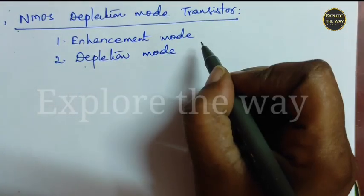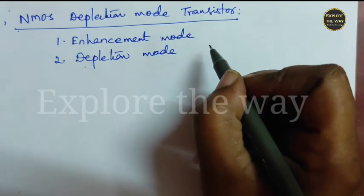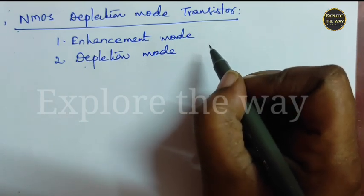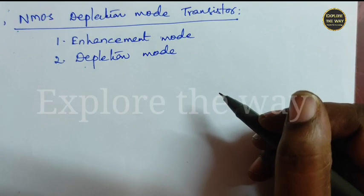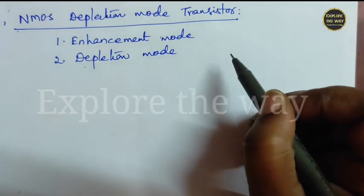In the enhancement mode transistor, there is no channel at the fabrication time. By applying proper VGS value, channel can be enhanced.